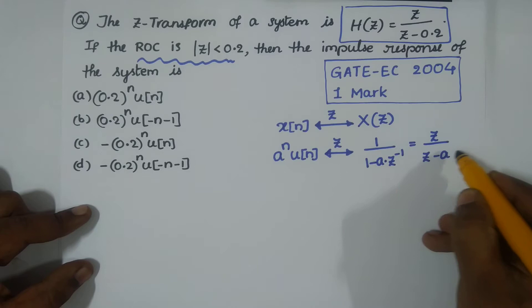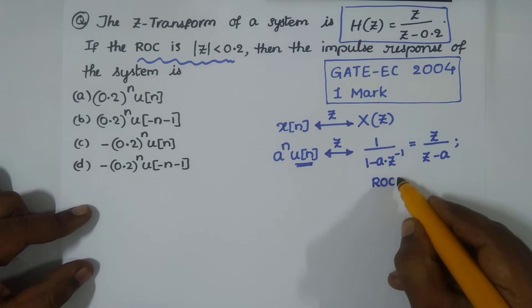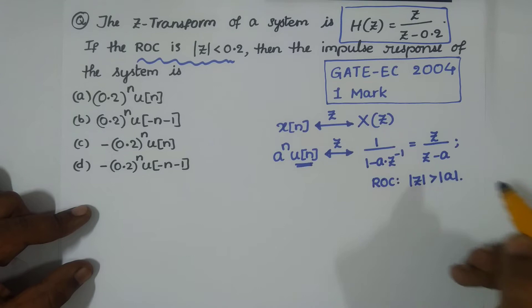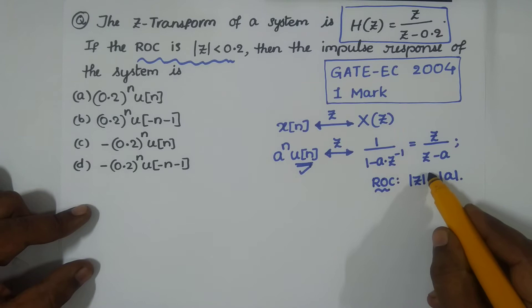As we have a causal sequence, the region of convergence for this causal sequence is |z| > |a|. For causal sequences, the region of convergence is always exterior of a circle with radius a, or this a could be a pole.